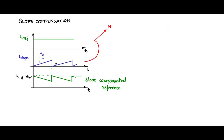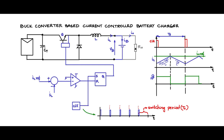The question is: how to generate this waveform? If we look at the inductor current during the (1 - d)·Ts period — the time when the switch is off — the slope of the inductor current is -vb/L, and the magnitude of that slope is vb/L.